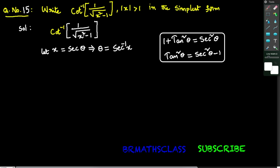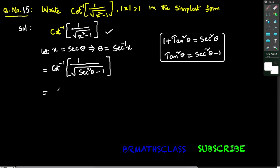Now, in the given expression, wherever x is there, you write secant theta. That equals cot inverse of 1 divided by square root of — now observe x squared. We take x as secant theta, so x squared is secant squared theta minus 1.